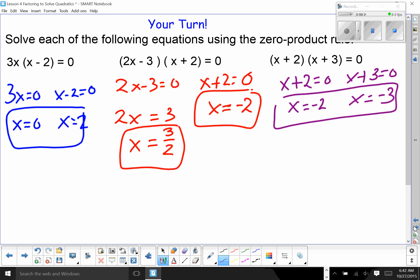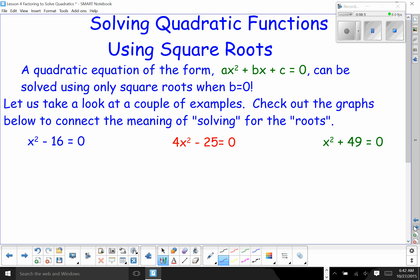Solving quadratic functions using square roots. It's similar and also very easy. If I don't have the b term, I can just solve it using square roots. In this case, x squared is equal to 16. I take the square root. x is equal to plus or minus 4. Remember that when you introduce the radical, you must account for both the positive and the negative.